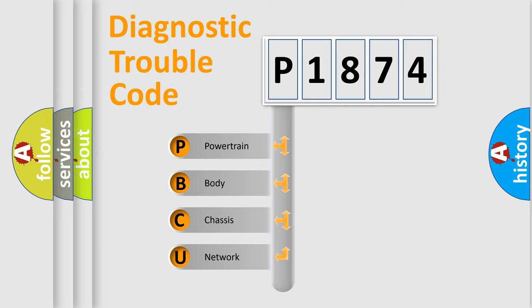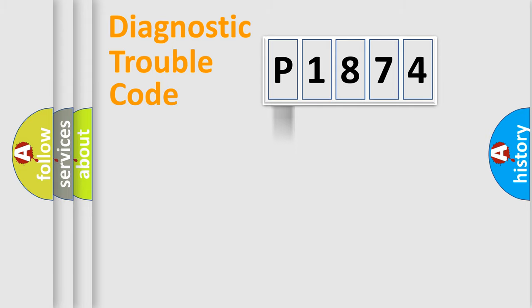We divide the electric system of automobile into four basic units: Powertrain, Body, Chassis, and Network. This distribution is defined in the first character code.